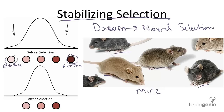Stabilizing selection — you've got that root word 'stable' in it — states that organisms with extreme forms of a trait will be eliminated from the population.